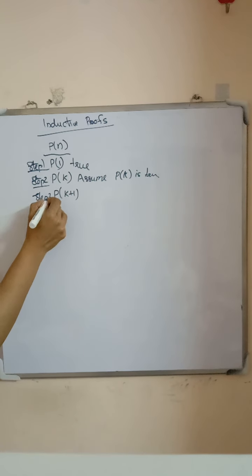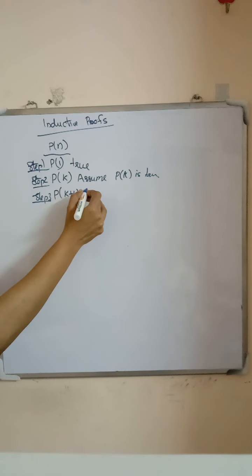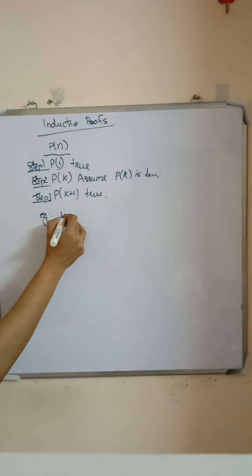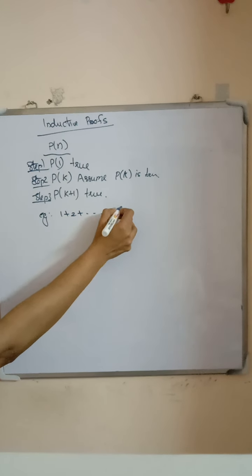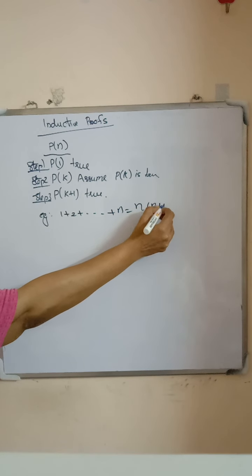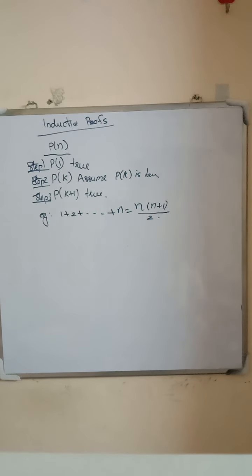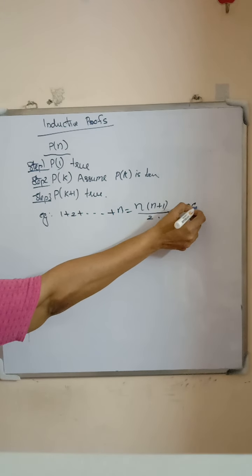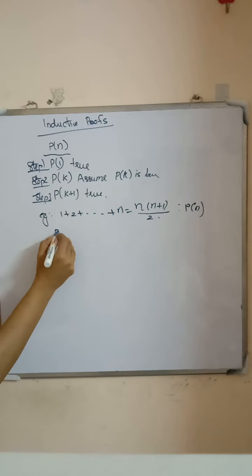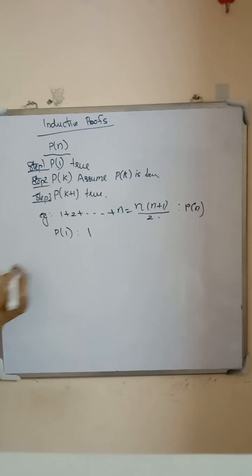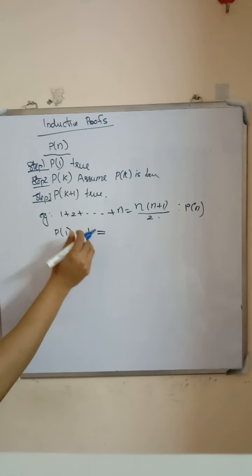In step two, we assume that P(K) is true. And finally, in step three, we have to prove that P(K+1) is true. For example, consider the statement: 1 + 2 + ... + N = N(N+1)/2, i.e., the sum of the first N natural numbers is N(N+1)/2. Let this statement be P(N).